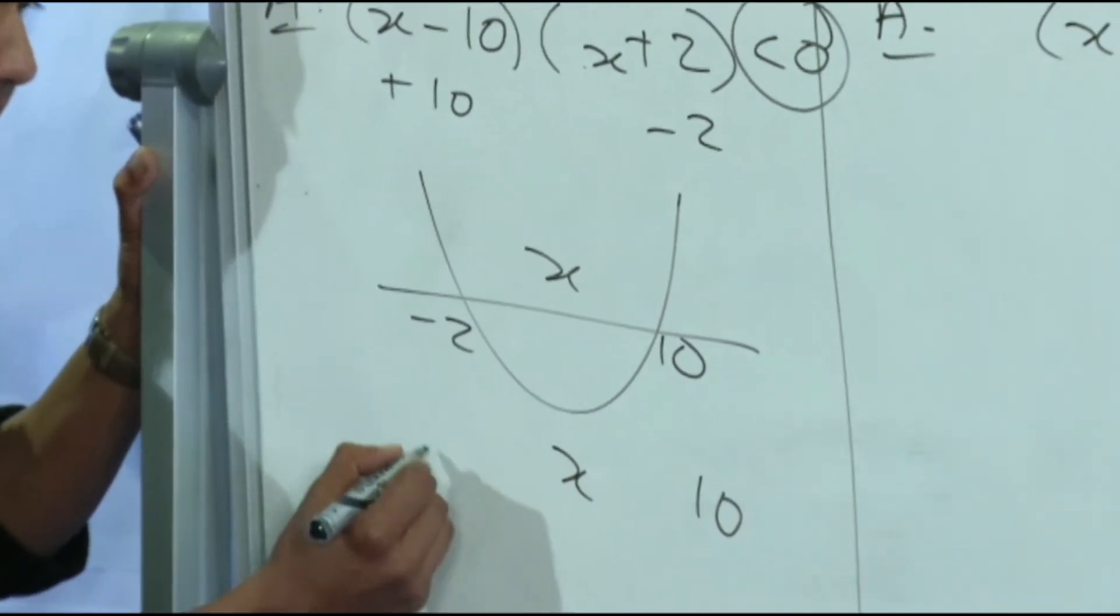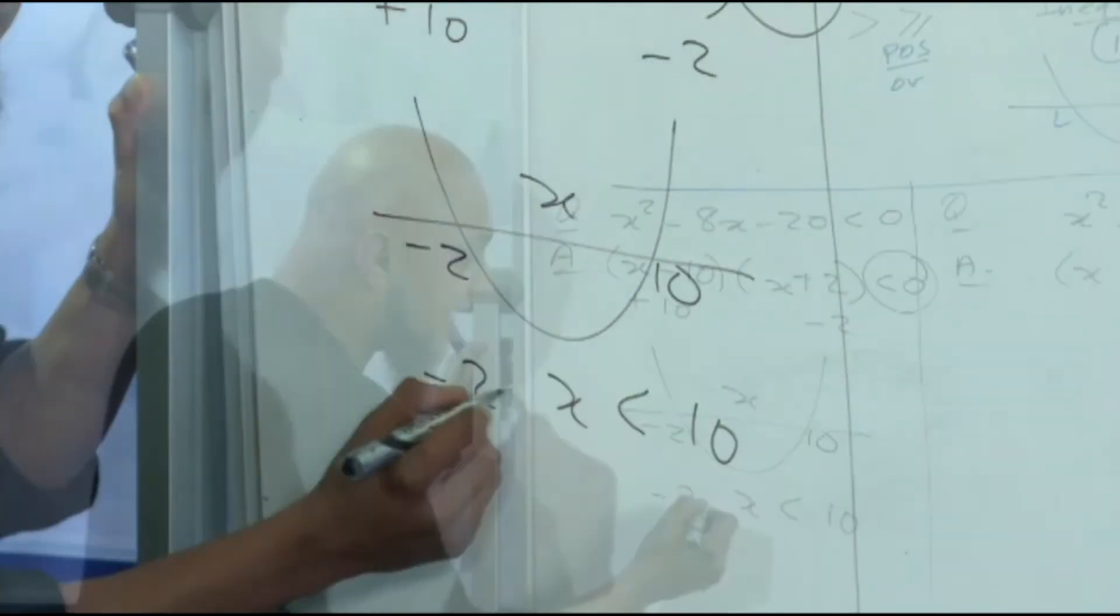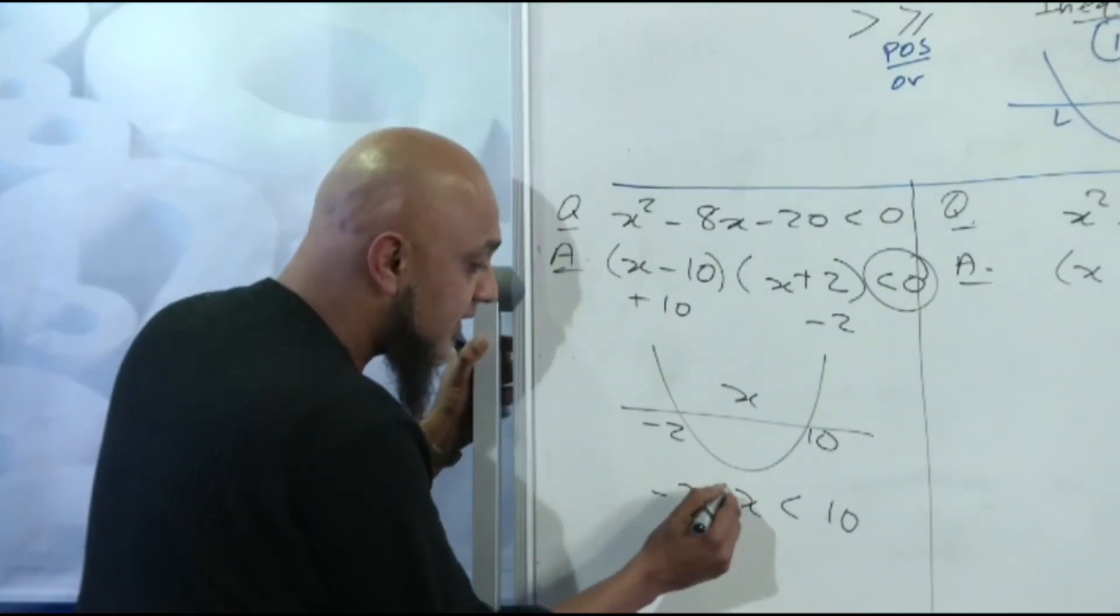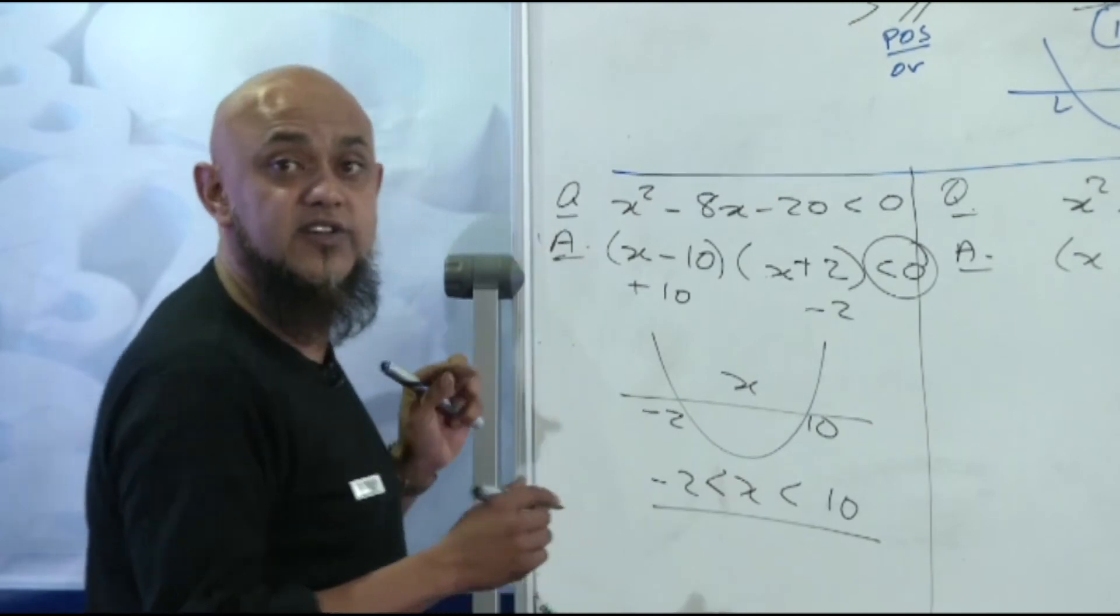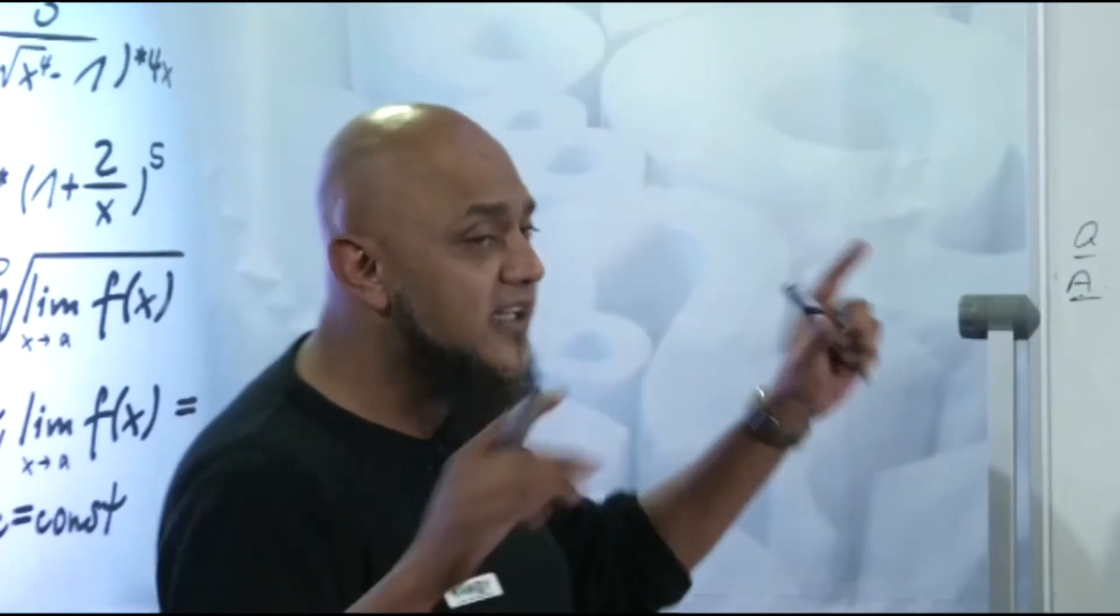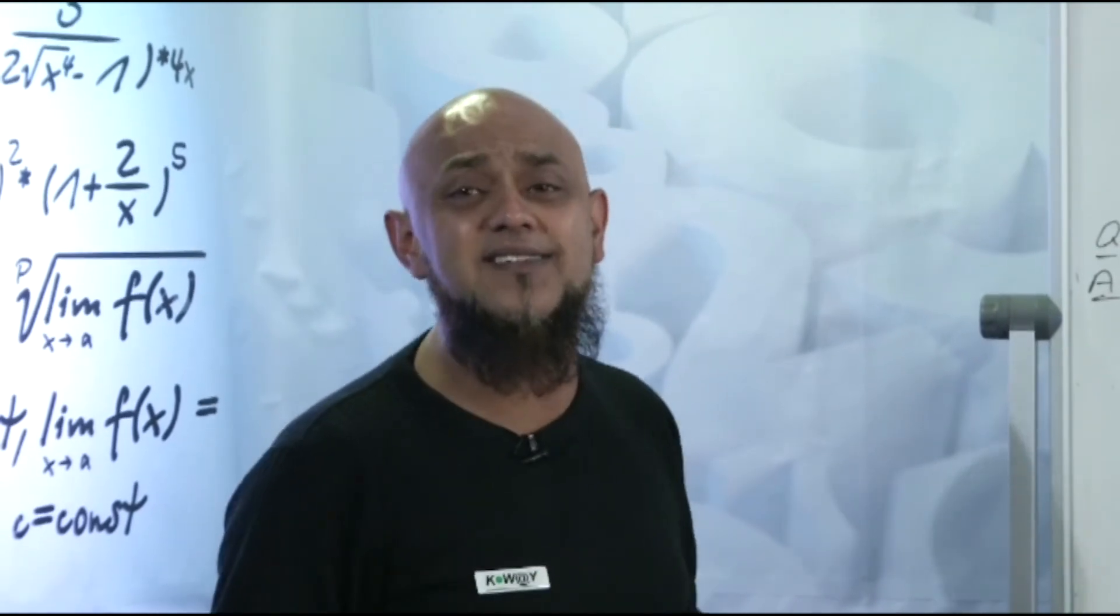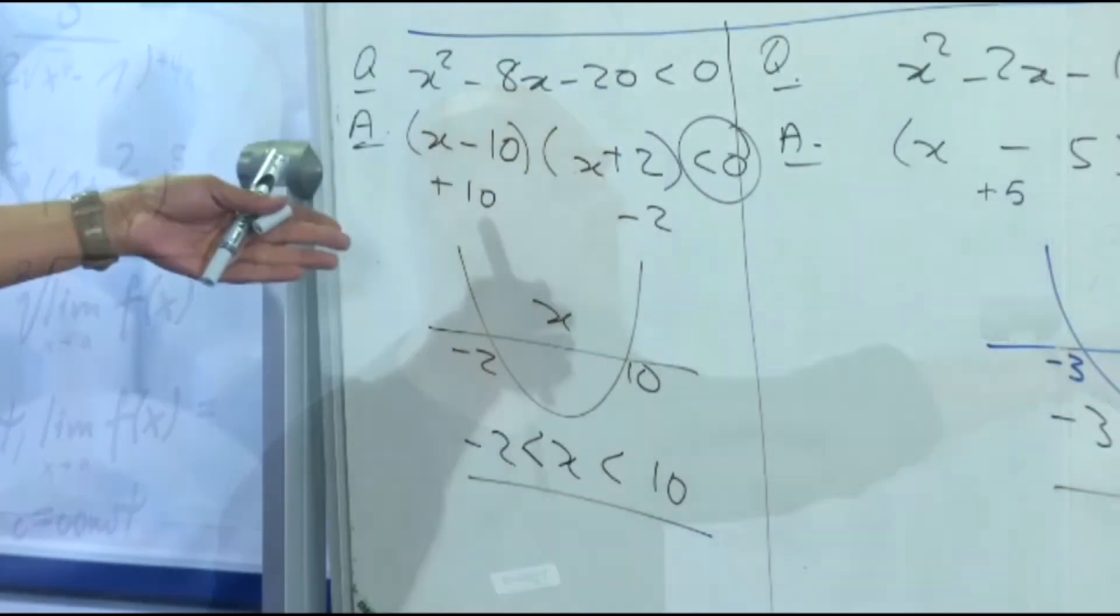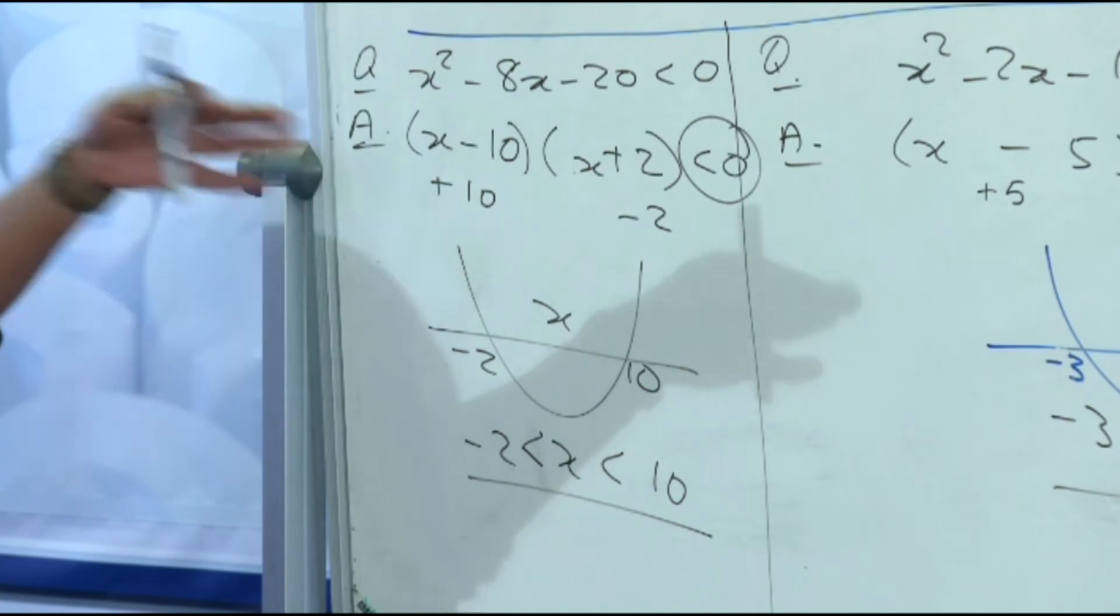Draw your rough parabola, lower critical value first, higher critical value second. Less than zero: negative, between. x between negative 2 and 10, use the same sign less than, less than. And there we go boys and girls, you got yourself five to six marks in the exam. Many of you draw the table, you draw a number line, you check your signs. It takes you 10 to 15 minutes just to answer a simple 10 second question. Please make sure you apply these processes.